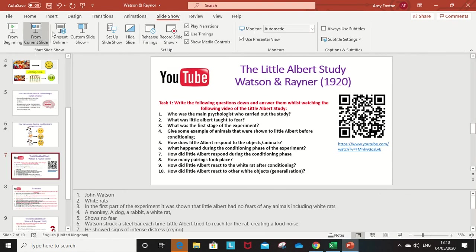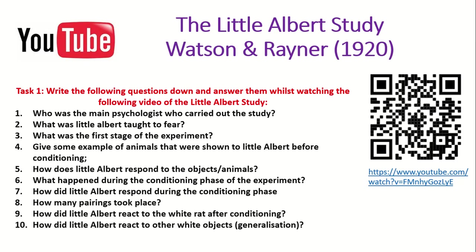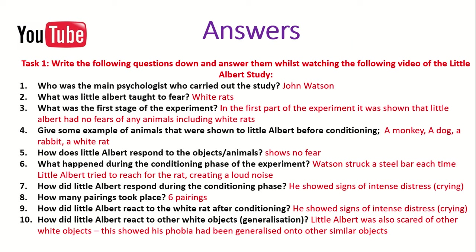Hopefully you've managed to answer most of those questions. Feel free to watch the video in your own time and rewind it if you need to go back to any of those questions. I am going to go through the answers next, so if you haven't completed all those questions, just pause the video and press play when you're ready. So the first question — who was the main psychologist who carried out the study? The answer was John Watson, and also Rayner as well.